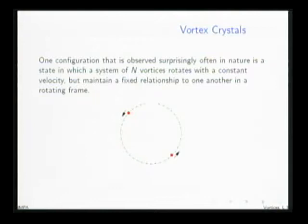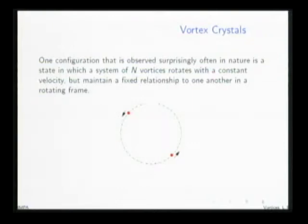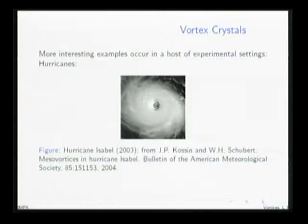For the two-vortex problem, the typical situation is that these two vortices rotate around some common center with a fixed angular frequency. That's just an elementary integration of the differential equations, but surprisingly, this is a very common phenomenon even when one has more than two vortices. One sees many examples in nature of a collection of vortices rotating with a fixed angular frequency that, in a rotating frame of reference, maintain their relative separation.